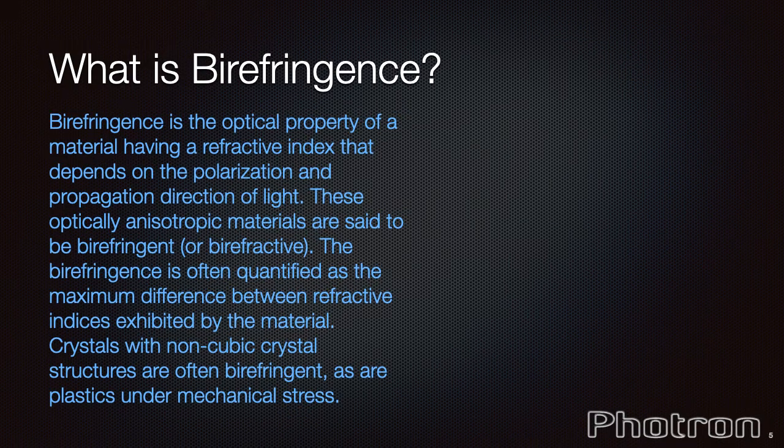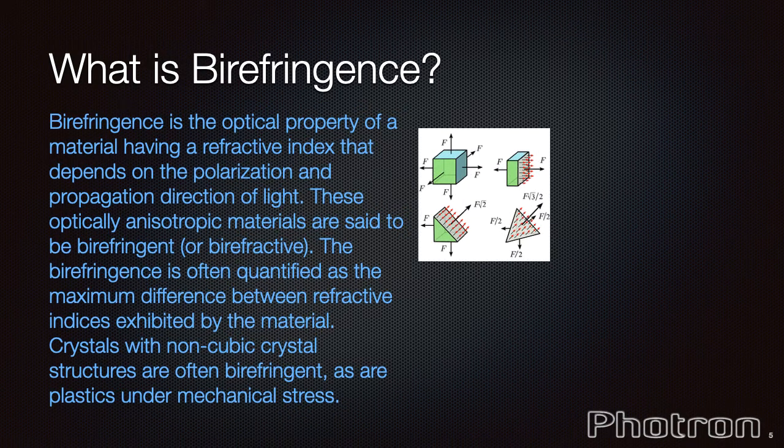What is birefringence? Well, crystalline materials can be classified as either isotropic, where refraction is symmetrical, so the same regardless of the direction of the light passing through the material, for example glass or even sodium chloride.